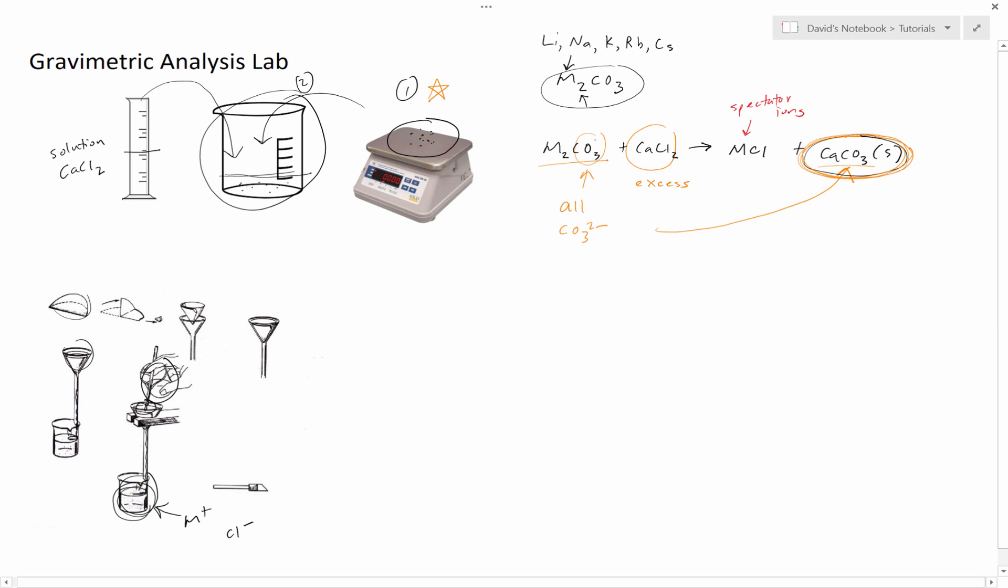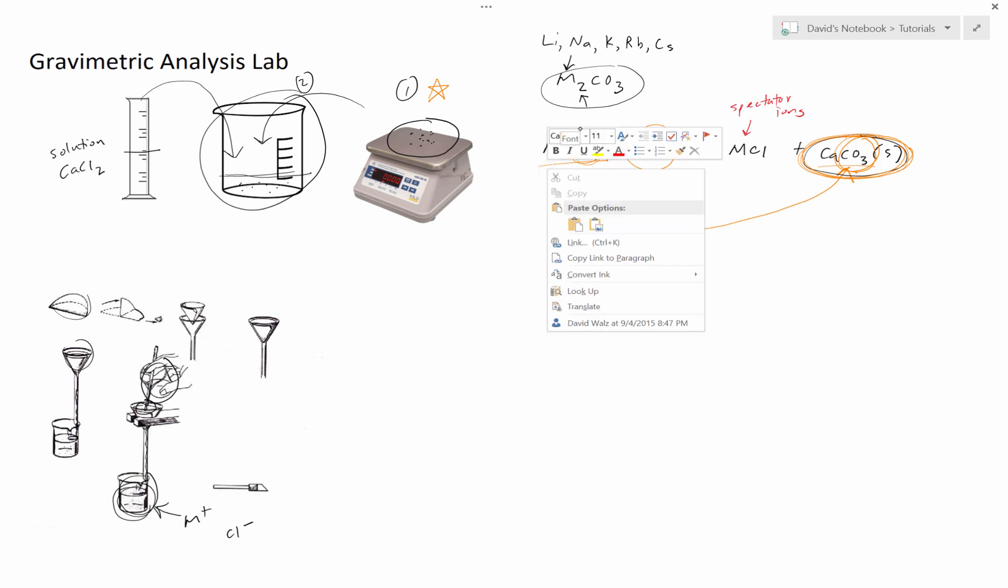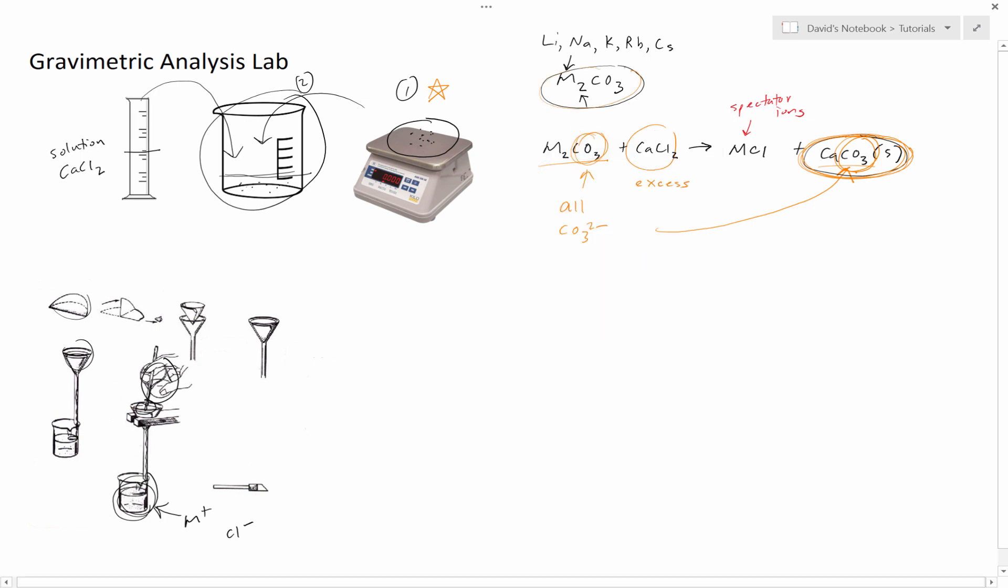Since this one is fully consumed, we can ensure that all of this calcium carbonate came from this. So we can go mole of this to mole of this. And since we weighed this at the beginning, we'll have the grams.